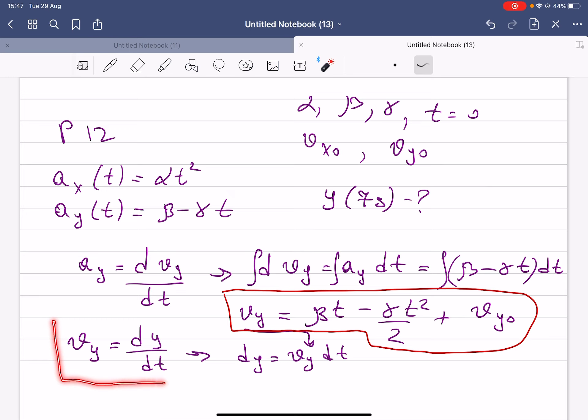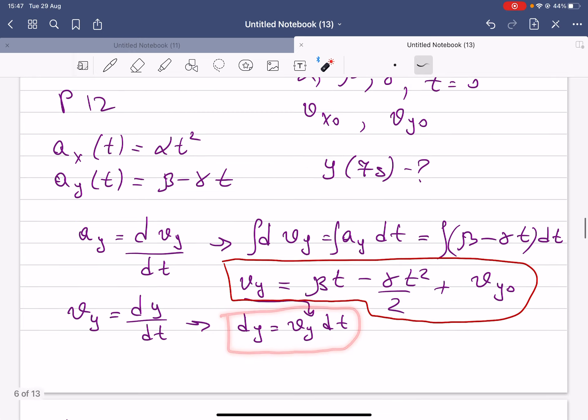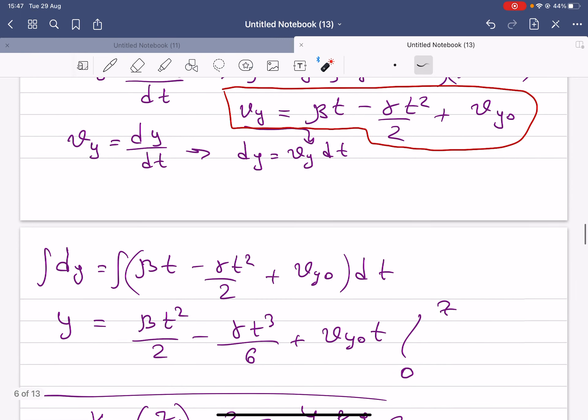We know that vy equals dy over dt, and from there we want to find dy, which is equal to vy times dt. Now by integrating both sides again, plugging vy into here, we can integrate this equation.